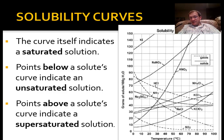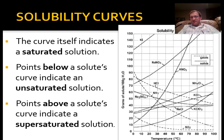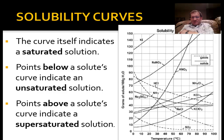Anything above the line would represent a supersaturated solution for that solute at that temperature. As we look at the curves here, there are 10 or 12 of them on this page — each represents a different solute and the temperatures and solubility relationship for that solute alone. Often the challenge is simply to make sure you're looking at the right curve and not switching to the wrong line as you move across the page.